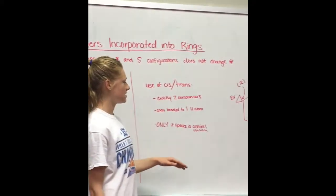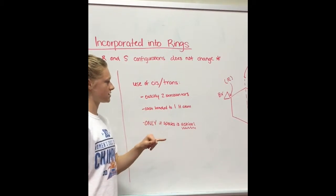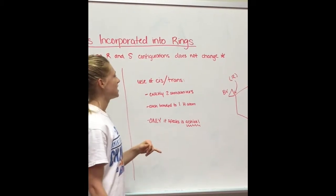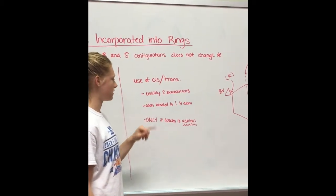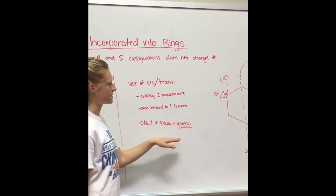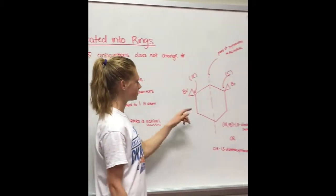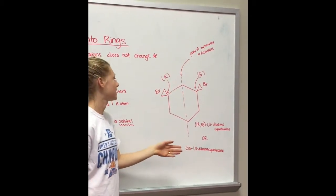The only situation where you can use cis and trans versus the R and S is if there are exactly two stereocenters bonded to the ring, each is bonded to one H atom, and only if the species is achiral. So with this species there's a plane of symmetry. It's achiral.